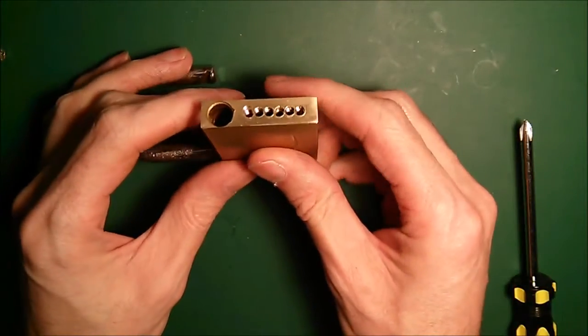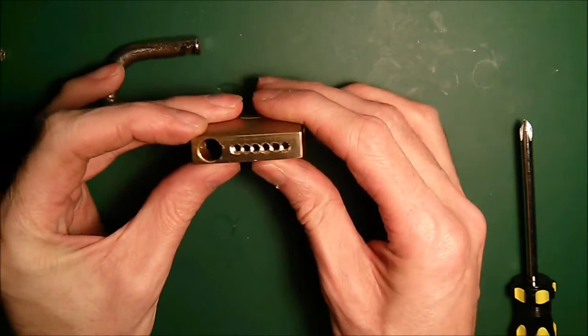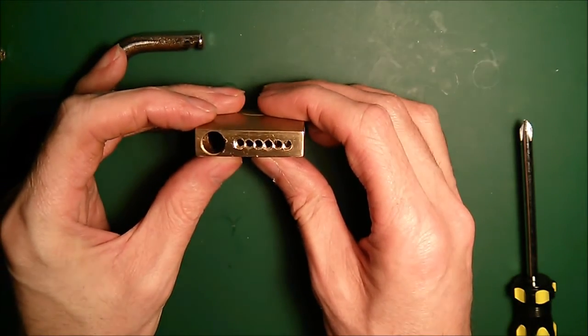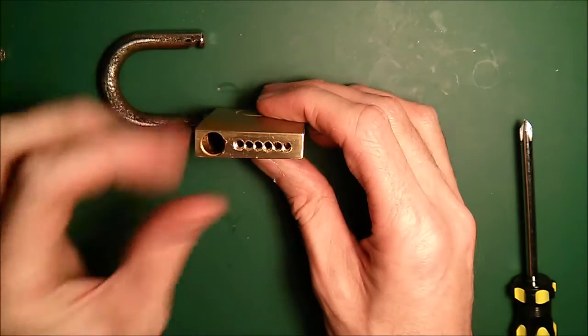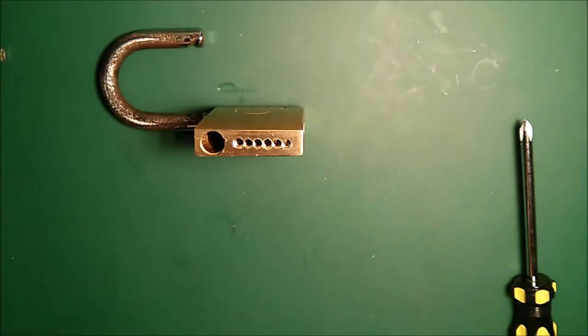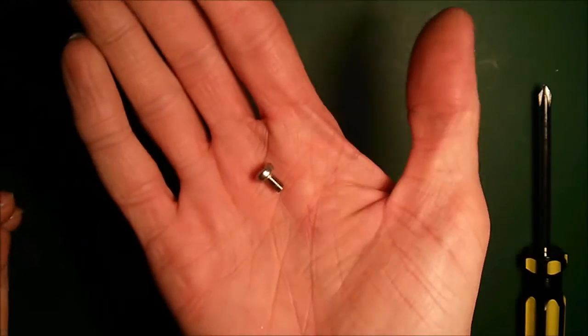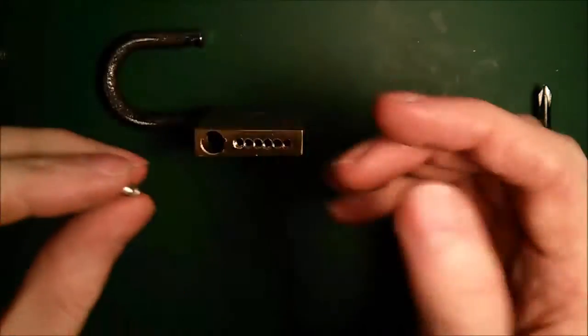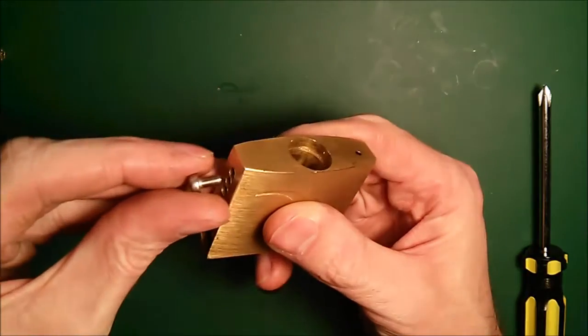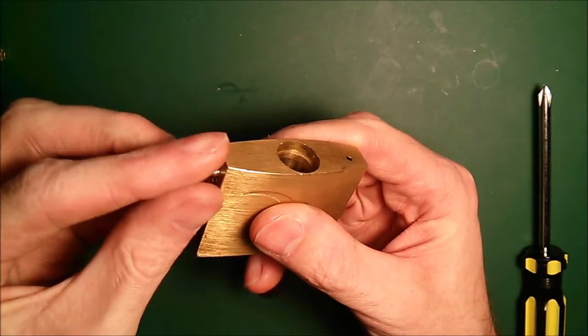All right so we've tapped all six of those little ports with the three and a half mil tap. I've gone in about four mil I would think. Now I can't find a source of three and a half mil grub screws, so as if this wasn't fiddly enough already we're going to use just regular three and a half mil screws and convert them to grub screws.